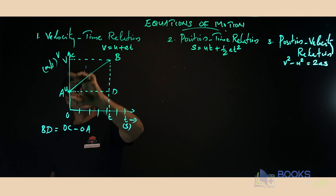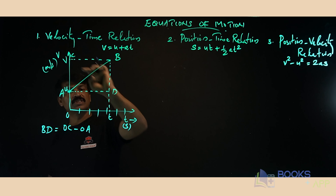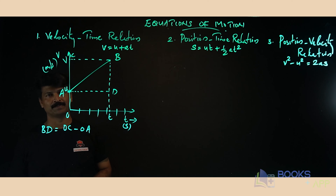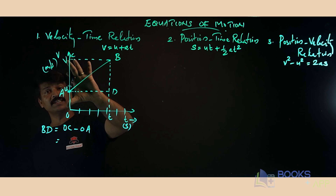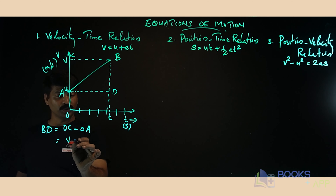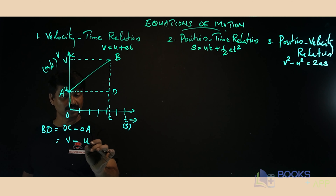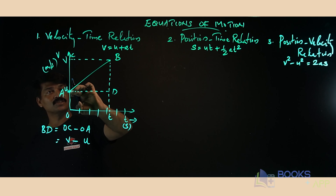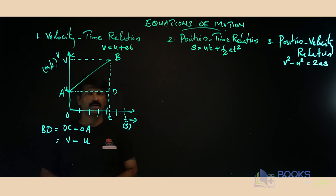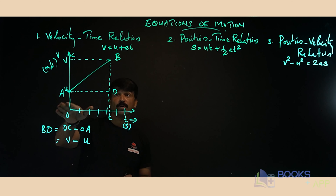OC is the final velocity v, and OA is the initial velocity u. Therefore BD is equal to v minus u.